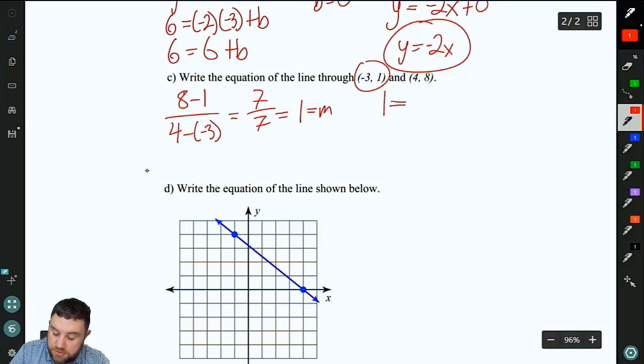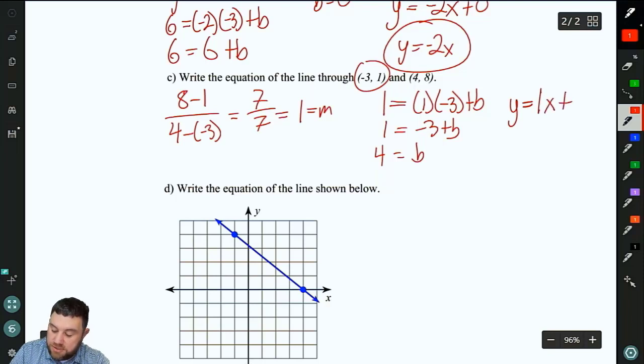So y equals mx plus b. 1 equals negative 3 plus b. So b is 4. So now we have y equals our slope was 1x plus 4. And again, we don't usually write 1x. So we'll write y equals x plus 4.